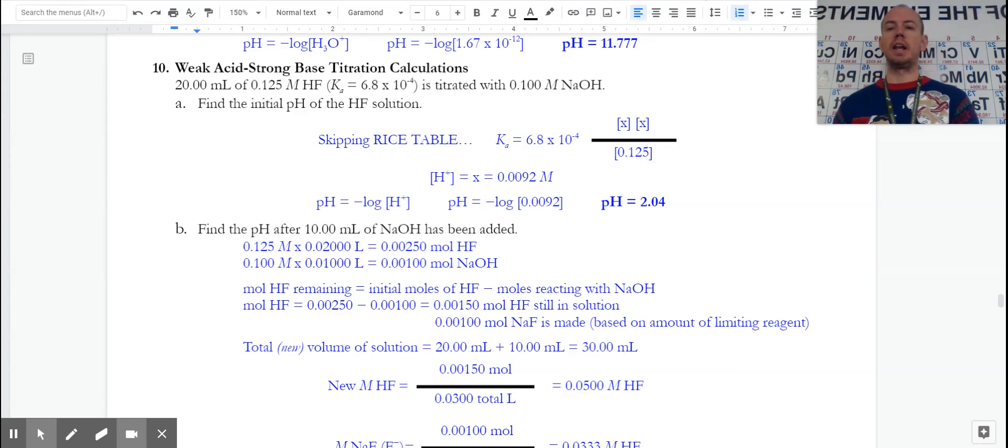So what we start with is we recognize I have a weak acid, I know its molarity, I know its volume, and the Ka is given, and we're adding a strong base to it. The first problem is the same idea: I just have my acid in solution with nothing else with it. It's important to recognize that and to not try to make it too hard or add any math to it. It is just, what's the pH of this weak acid? So we've got Ka equals x squared over my molarity, I solve for my x, which is my hydrogen ion concentration, and the negative log of that gives me my pH.